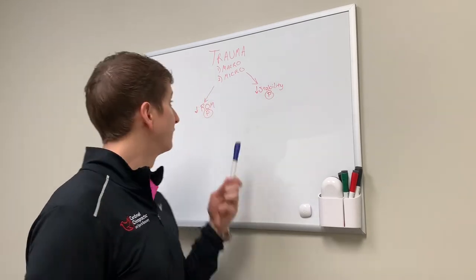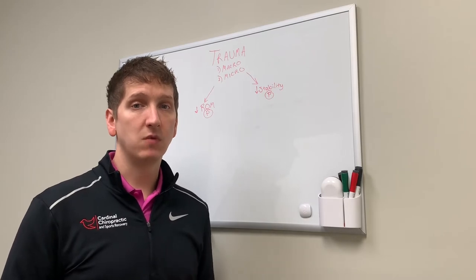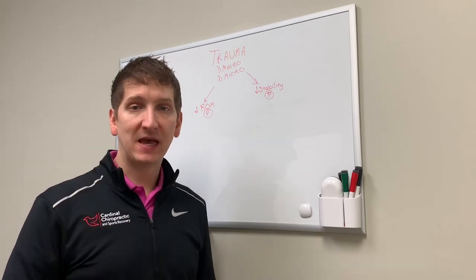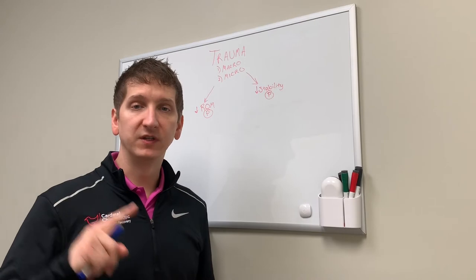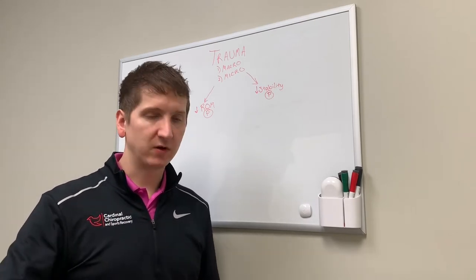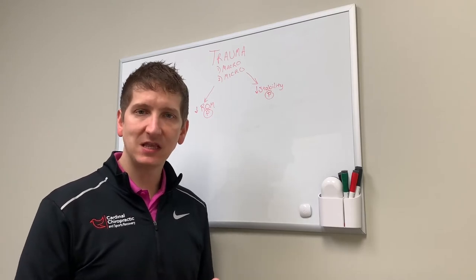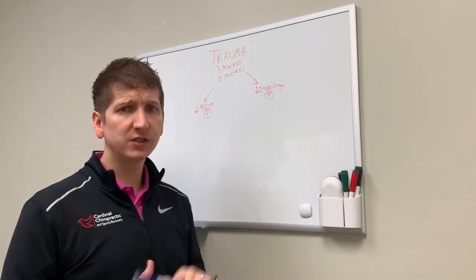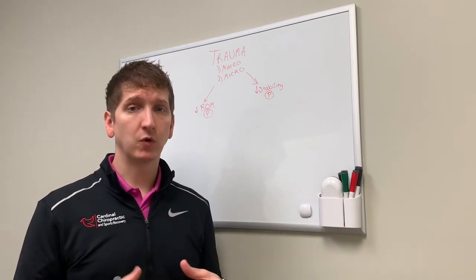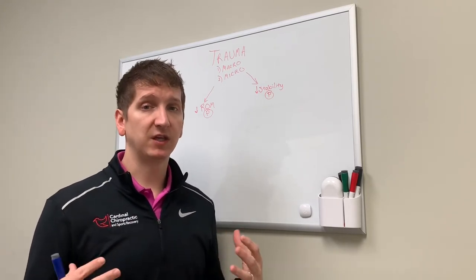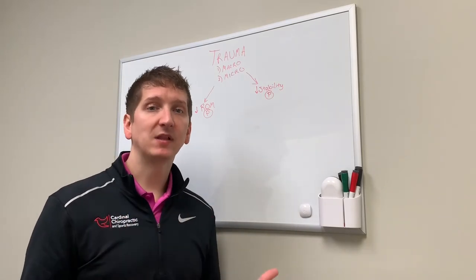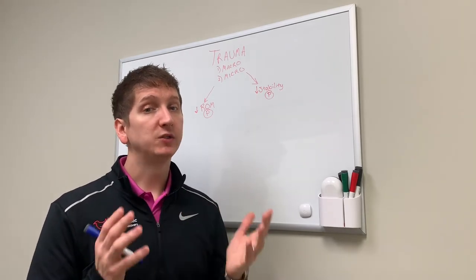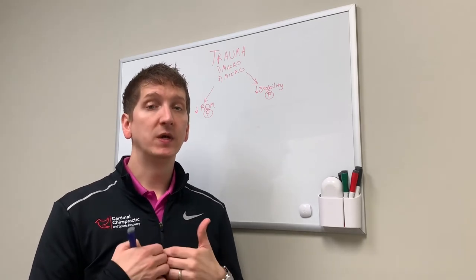So what does trauma cause? First and foremost, it causes a loss of range of motion. That happens from spasming muscles, from the joints being jammed up — we call that joint dysfunction — or we can have adhesions in the connective tissue. So we have a loss of good range of motion, and that causes pain. We also have a loss of good stability. The motor control — the muscles that are governing that range of motion, that are governing that area we've injured — are not stabilizing the joints properly. Sometimes that can actually influence your range of motion as well. Either way, we are going to be in pain.